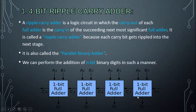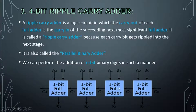Looking at this diagram, this is the 1-bit full adder, this is the full adder, and as you can see, the carry output of each full adder is going to the next most significant full adder. This output of a full adder is the input of the next full adder, and so on, since these carries are rippled into the next stage.